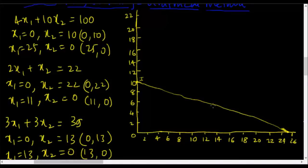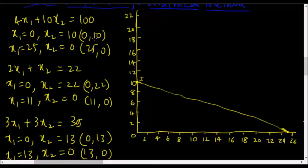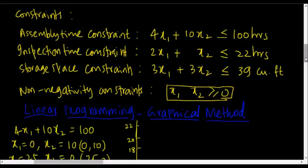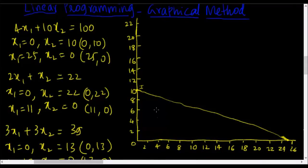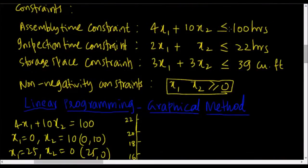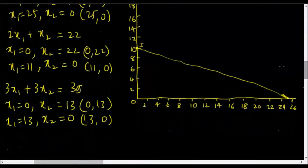Now I have drawn the first equation: 4x1 plus 10x2 equals 100, for which I found the two points (0,10) and (25,0). I connected those two points and got a straight line. Any point on this line will equal 100. Now I need to plot the inequality part — the less-than portion of this first constraint. What we do is pick one point below the line and one point above the line and insert them into the inequality constraint.